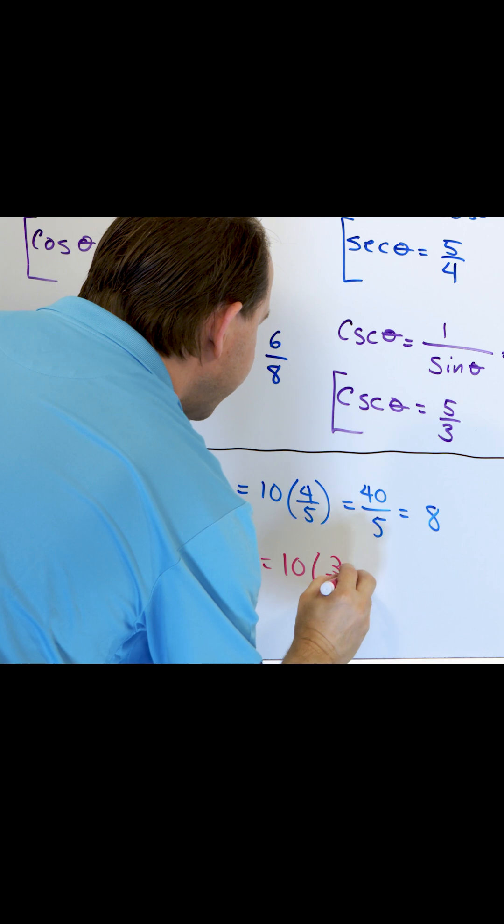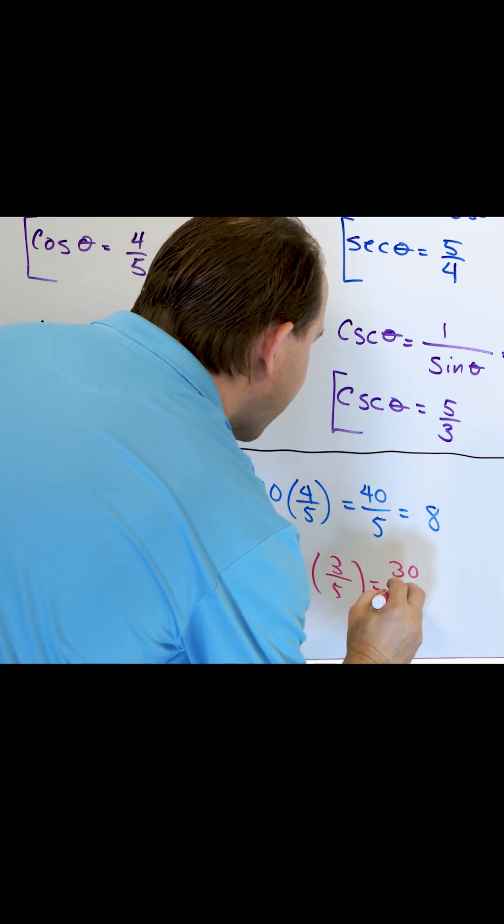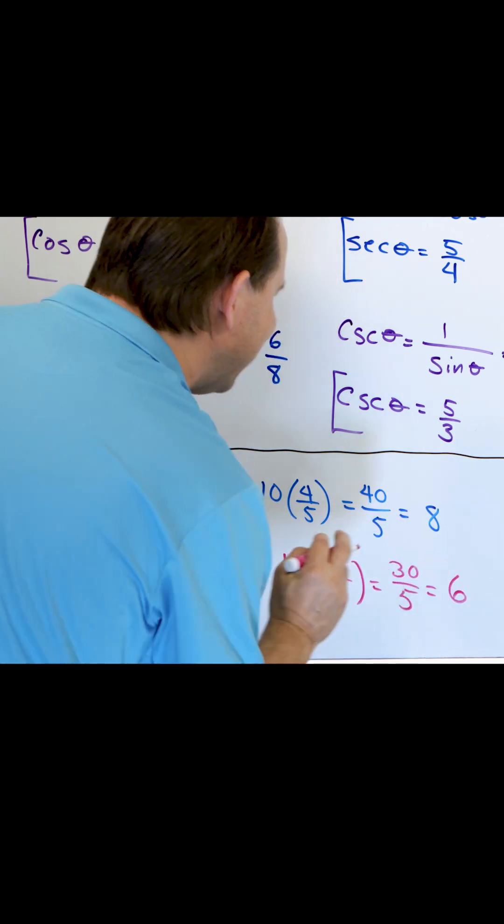So multiply by three fifths, on the top 30, on the bottom five, and I divide those and I get six.